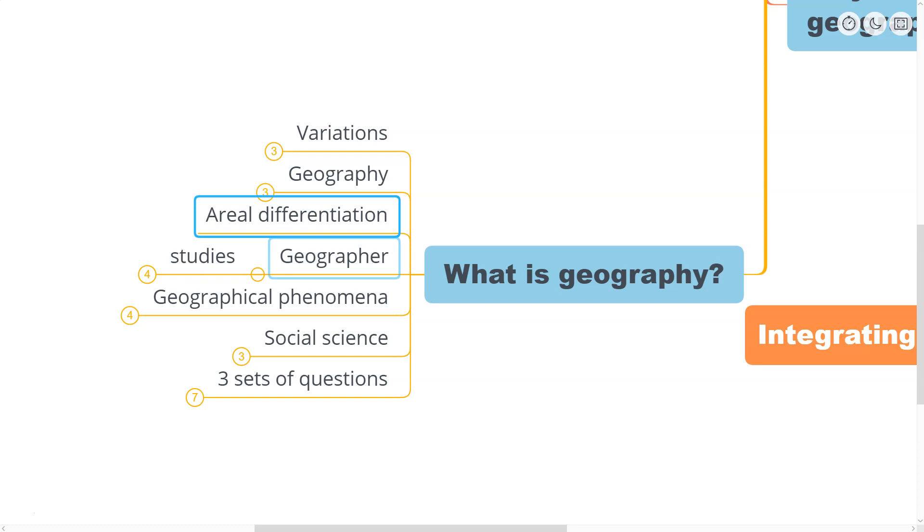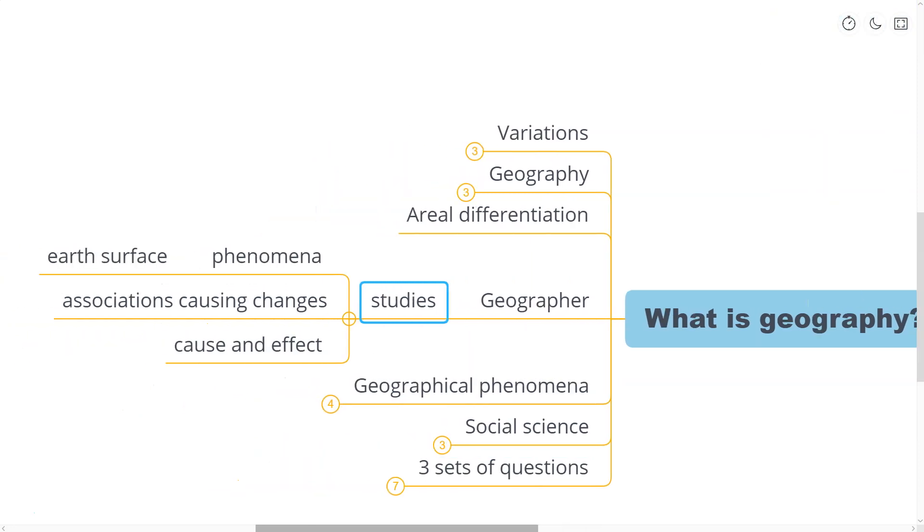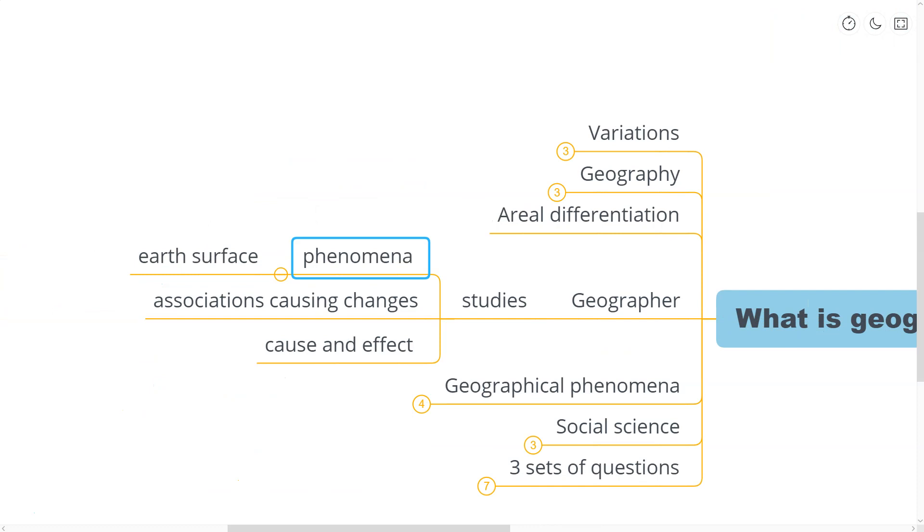That brings us to a question: what is a geographer? What does a geographer really try to do? First, clearly, a geographer does care about the phenomena on the earth's surface, but he doesn't stop there. He also studies the associations with the other factors which are causing these changes on the earth's phenomena.